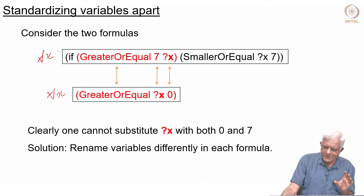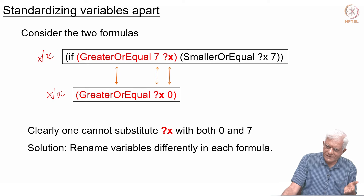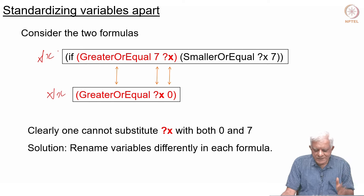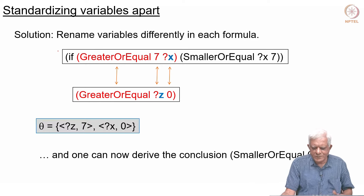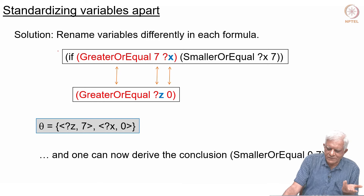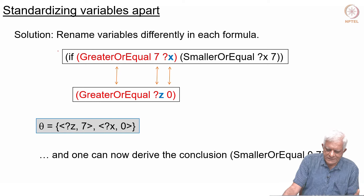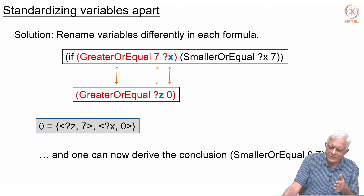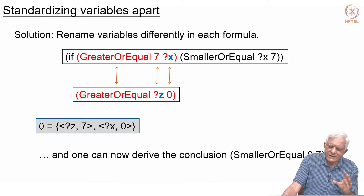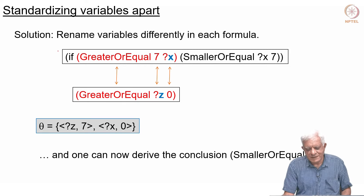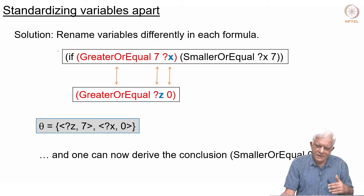The solution is to rename variables. Every time you write a new formula, use a different variable name — x1 in the second, x2 in the third, and so on. Then there is no problem: if you replace the variables with two different names, say x and z, you can unify z with 7 and x with 0 and everything is fine. One cardinal rule if you are writing programs to do forward chaining or any other form of reasoning is that you must standardize variables apart. Every formula must use a different variable name, because even though each formula is universal, the two formulas are independent of each other.